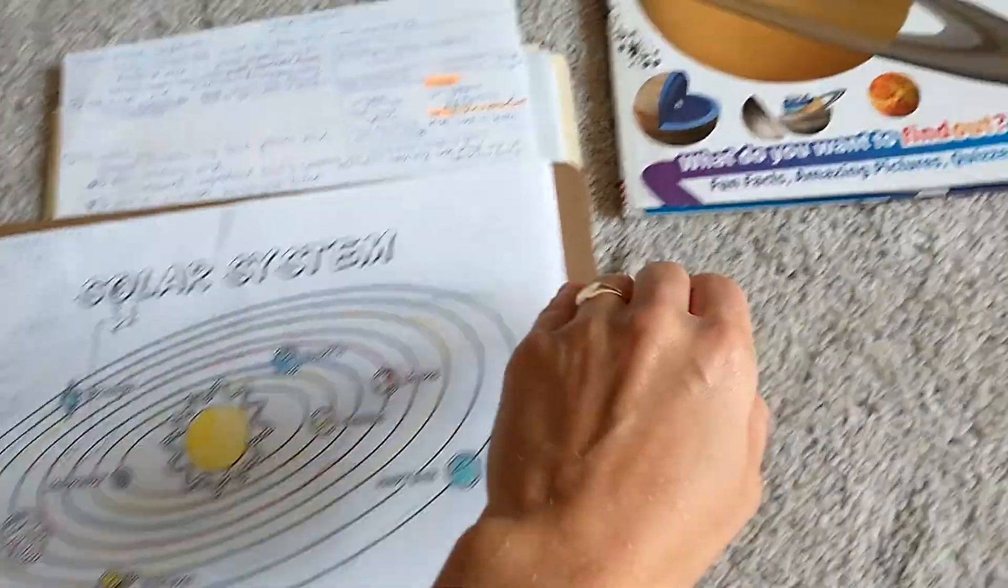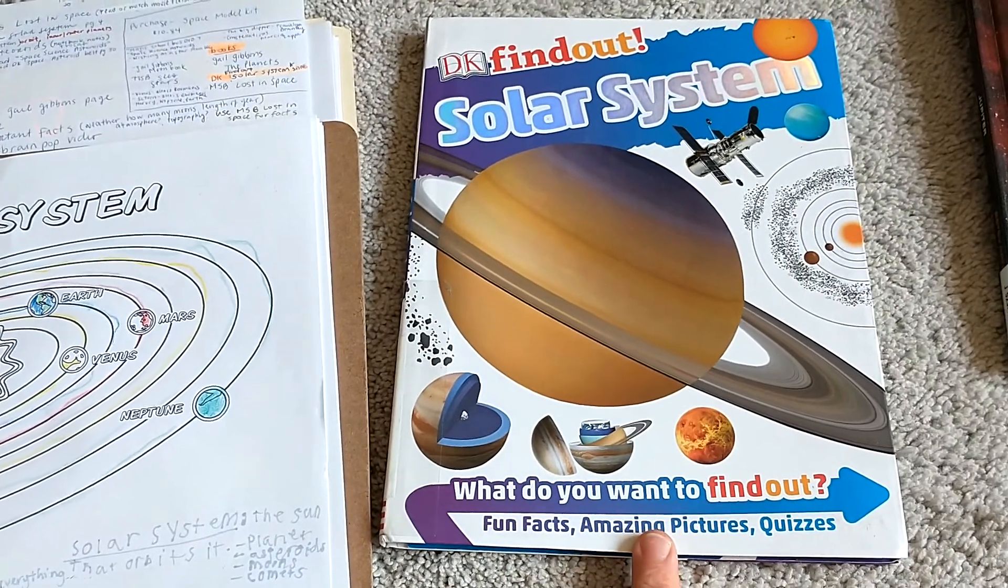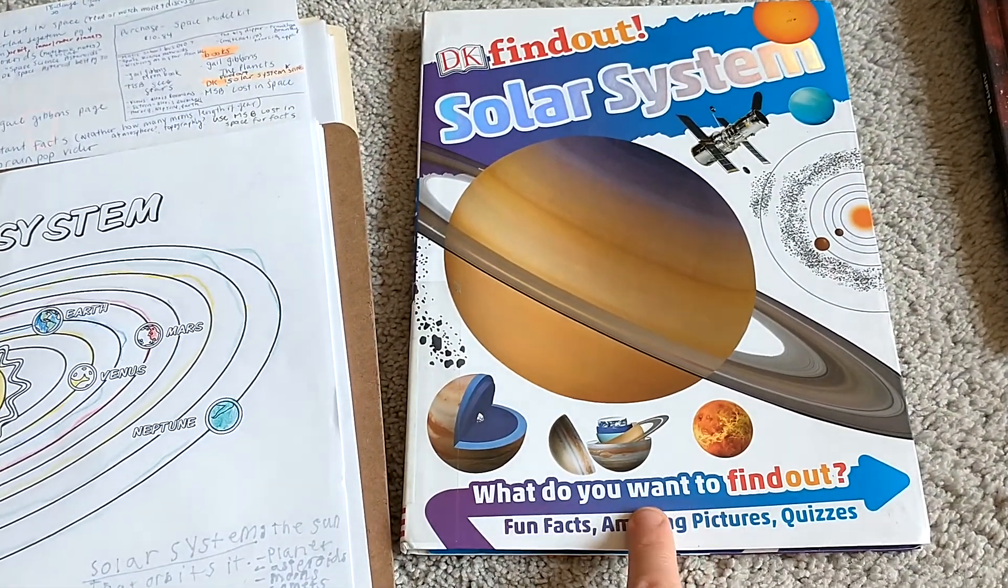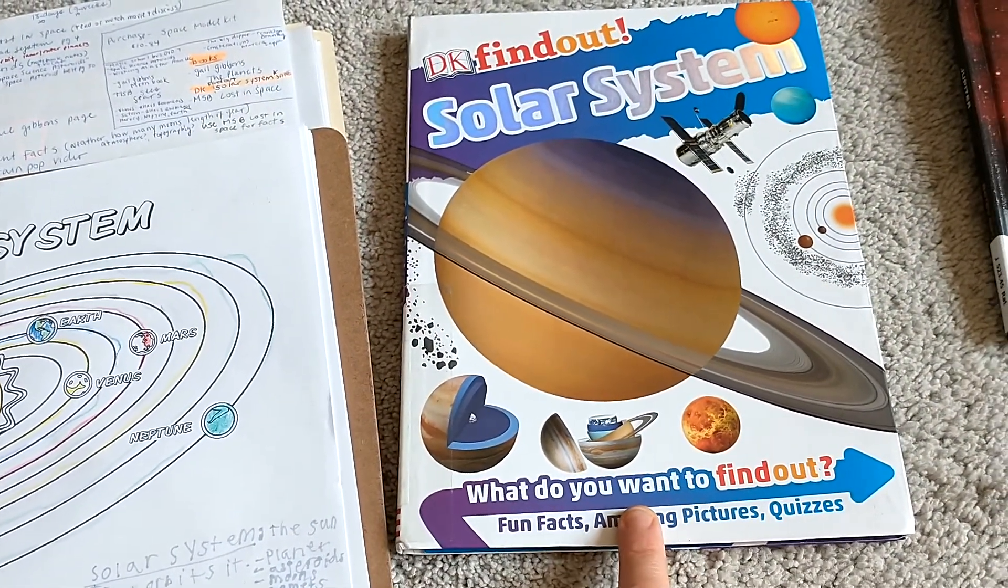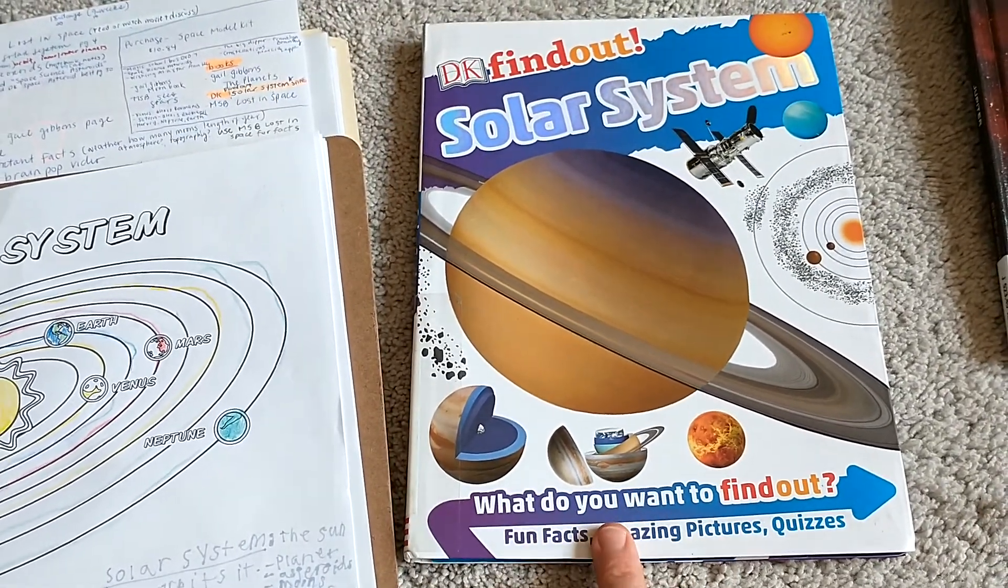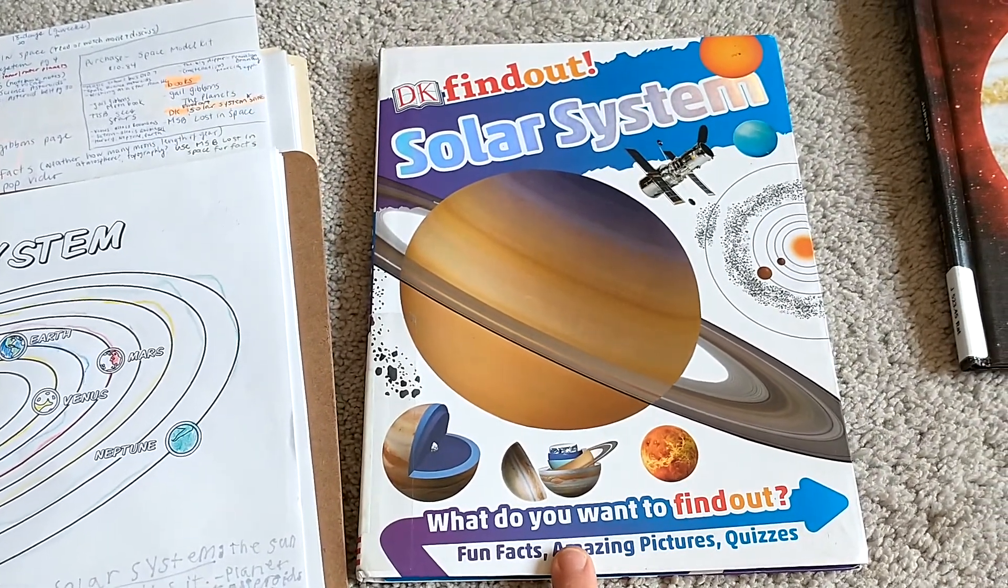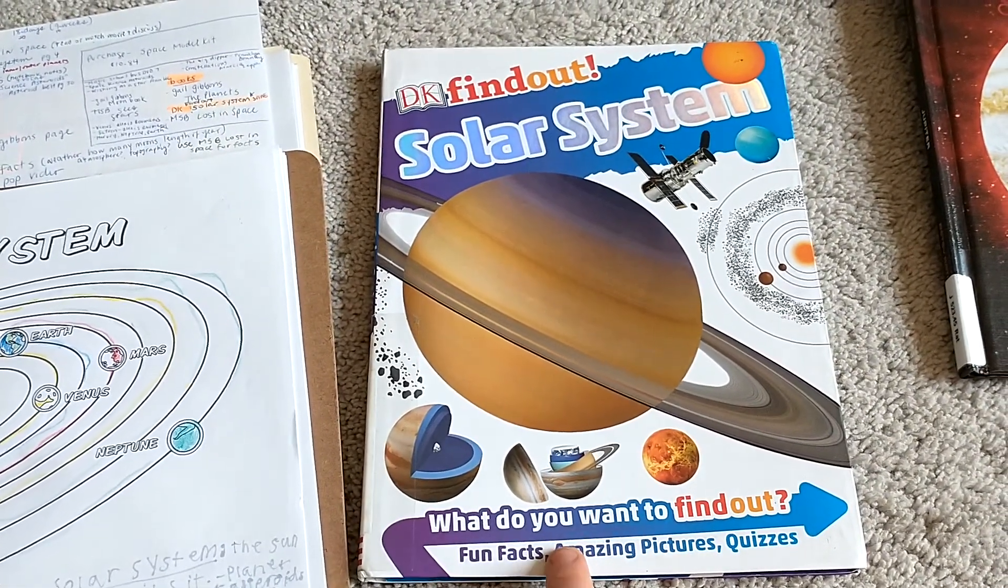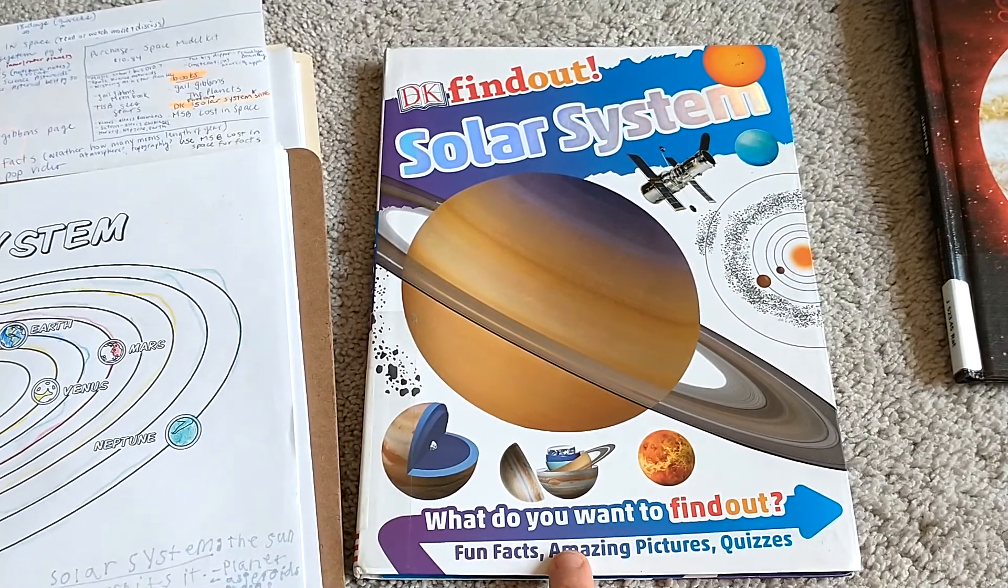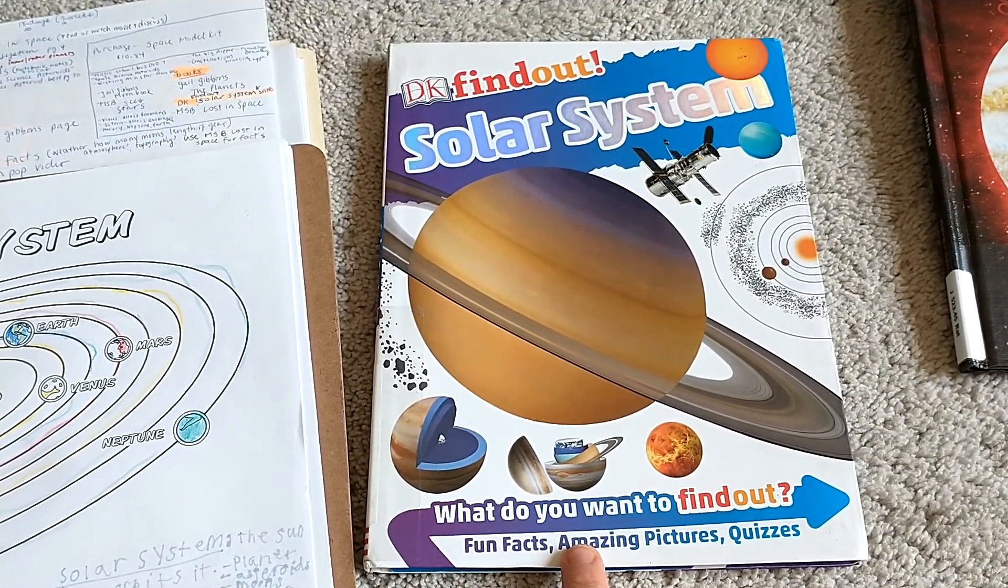So then the next day we got our spine. This is my spine. DK Find Out Solar System. It very broadly covers all the topics of space and the solar system. So I really like this and I just got this from the library. We have a library program where you're allowed to check out books for eight weeks. So it's very helpful to be able to get them for such a long period of time.